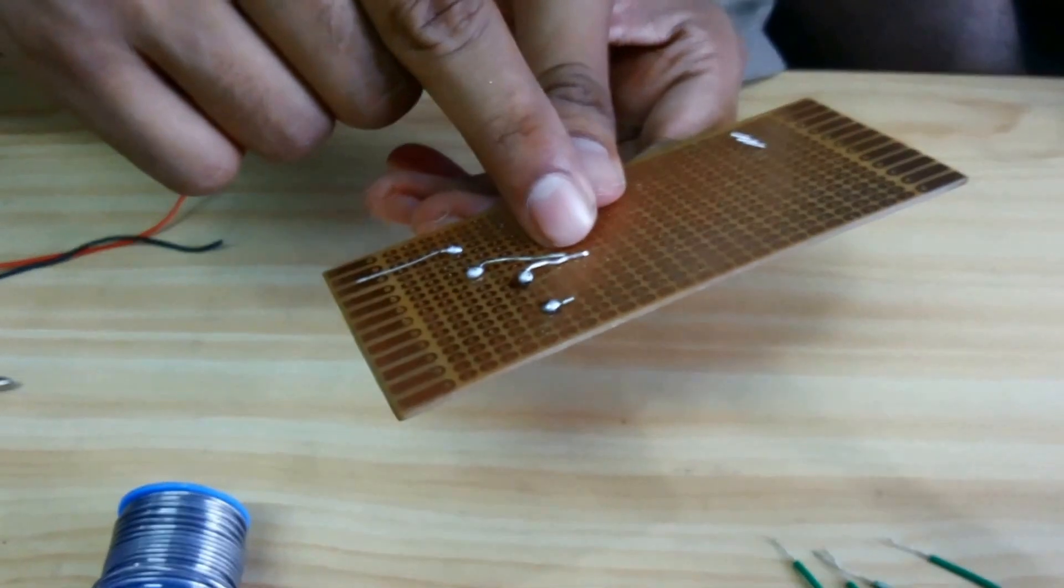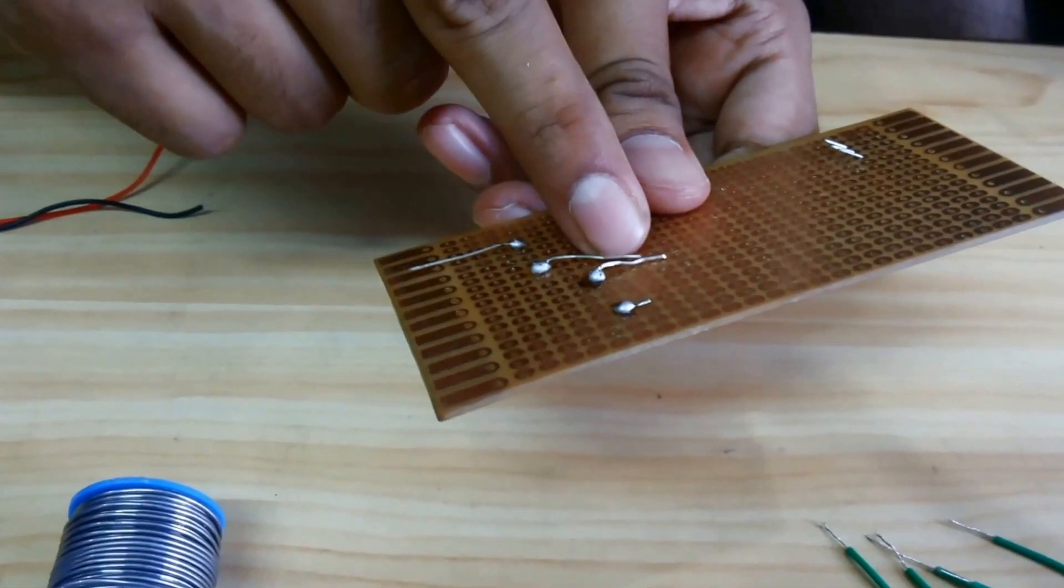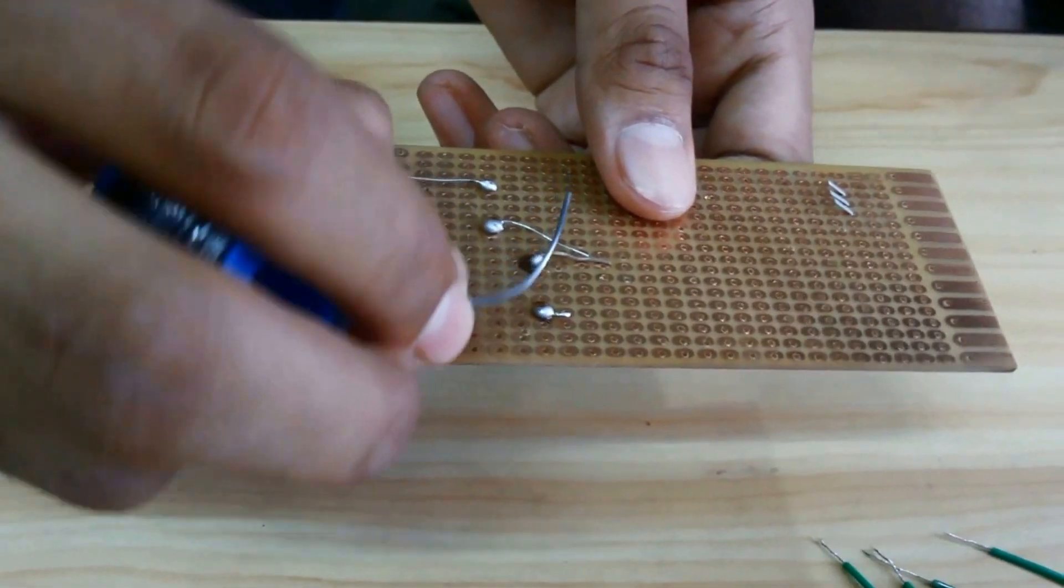Now here, the positive end of LED is connecting with the one end of resistance. We are soldering it together.